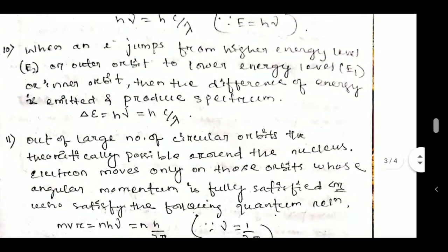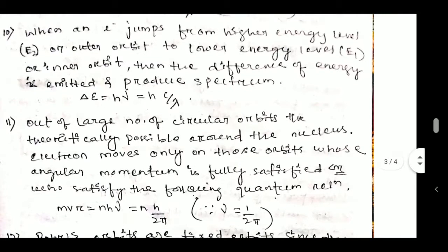When an electron jumps from higher energy level E₂ (outer orbit) to lower energy level or inner orbit, the difference of energy is emitted and produces a spectrum. This is the reverse process. In the lower state, the electron possesses less energy than in the higher state, so the difference of energy is released. The formula is: ΔE = hν = hc/λ.